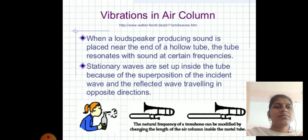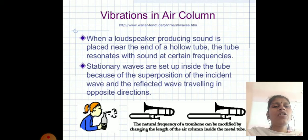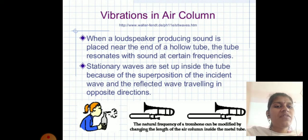Next, vibrations in an air column. When a loudspeaker producing sound is placed near the end of a hollow tube, the tube resonates with sound at certain frequencies. Stationary waves are set up inside the tube due to the superposition of incident waves and reflected waves travelling in opposite directions.